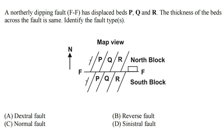If you read the question: a northerly dipping fault FF has displaced beds P, Q, and R. So if you see, this is the fault F and F, and this fault which is northerly dipping — it's dipping towards north — and this fault has displaced these beds which are P, Q, and R. A fault generally displaces beds; this is a recognition criteria of the fault.